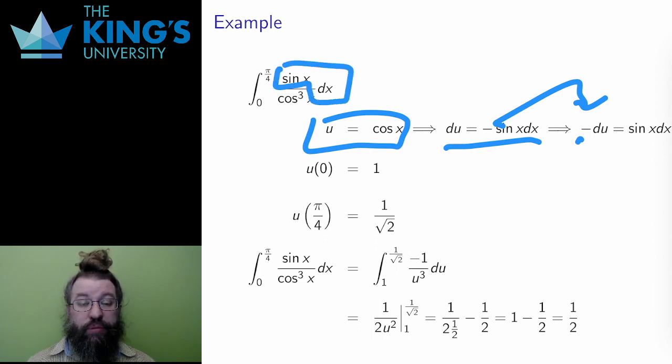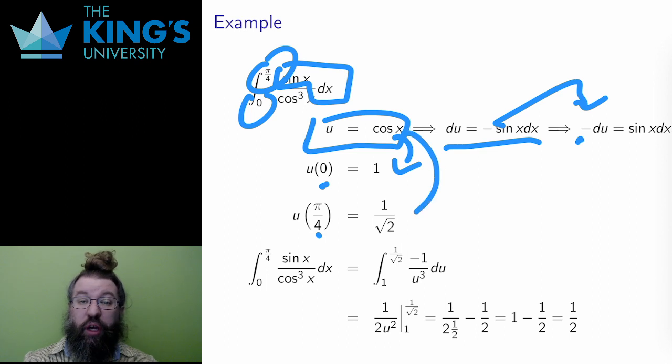Then I change the bounds. When x is 0, u is the cosine of 0, which is 1. When x is pi over 4, u is the cosine of pi over 4, which is 1 over root 2 according to a unit circle diagram.